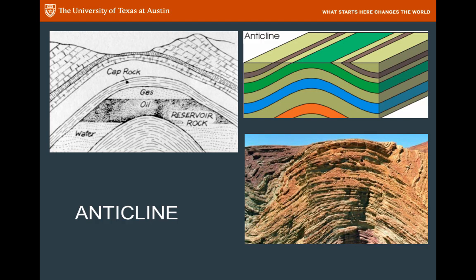An anticline is just the opposite — it comes from 'anti' meaning away and 'klein' meaning angled. So the two limbs are angled away from each other in an anticline, and it looks a bit like a dome. The center is pushed up, and therefore, in the opposite of synclines, the older rocks show up in the center of an anticline. So if you're walking across the surface of one of these folds, you would come from younger rocks into older rocks and back into younger rocks again — and that's how you know you're in an anticline. Anticlines also tend to be nice traps for liquids in rocks like oil, gas, and water, so geologists look for anticlines as a place where oil and gas might be found.